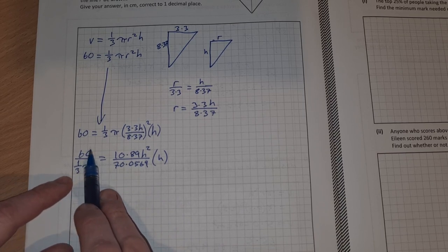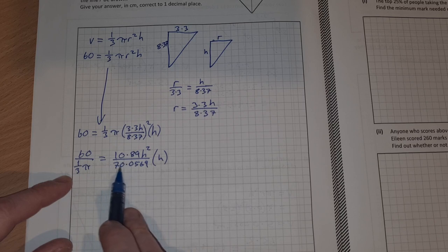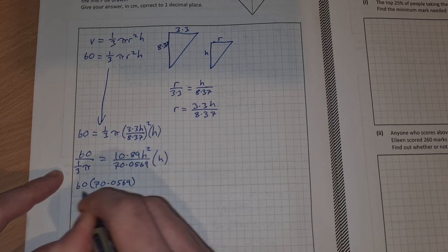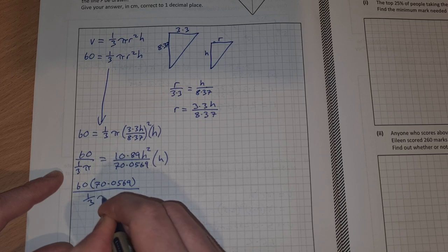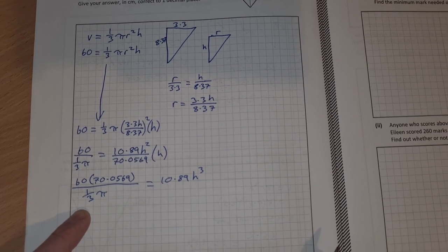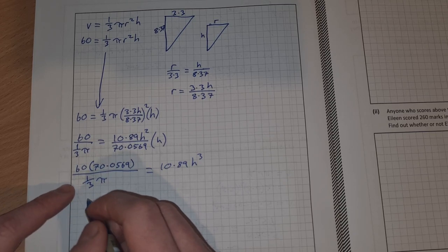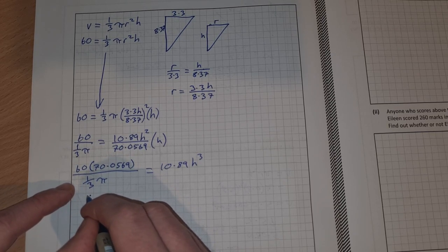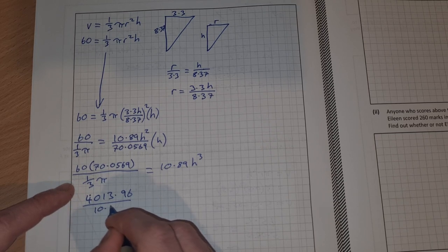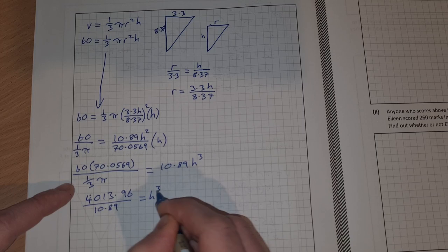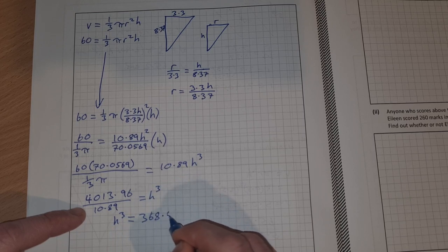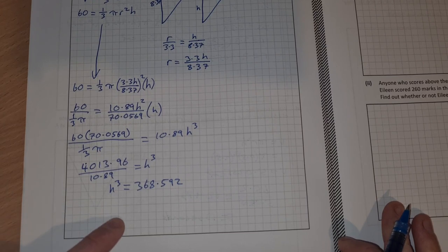I'm going to sort out this side here. 60 divide, I'm going to multiply by 70 actually to get rid of that fraction there. So 60 times 70.0569 over ⅓π, that's equal to 10.89h³. Then I can pop that into the calculator just to tidy it up a bit. It's going to be 4013.96, and then I'm going to divide by this 10.89. Divided by 10.89 equals h³. So h³ equals, divide that out, you get 368.592. Then we can take the cubed root of that to find h.